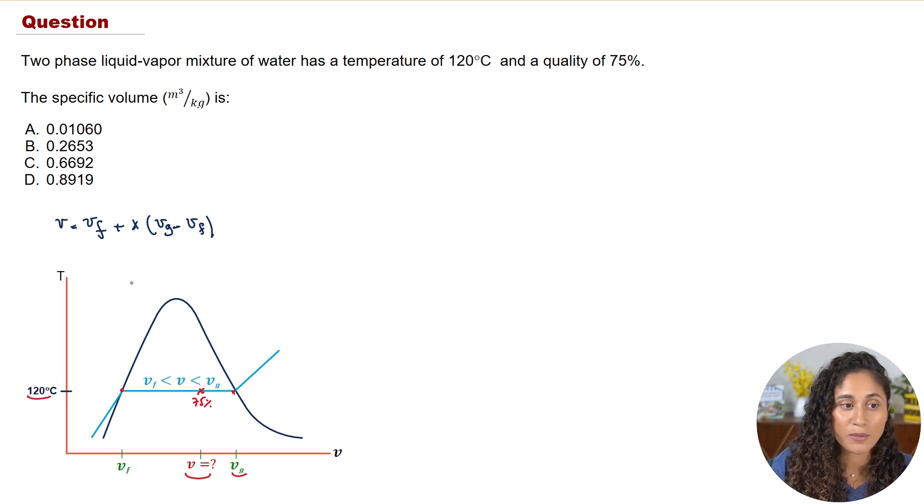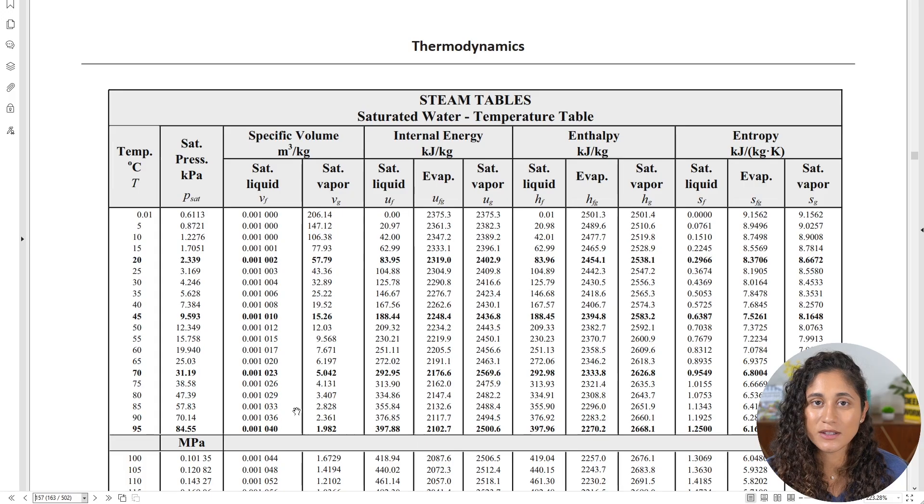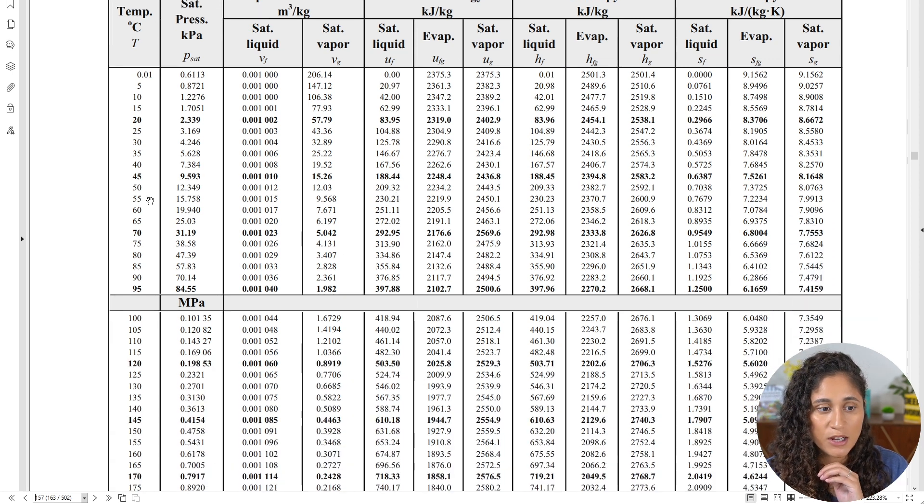So now let's go to the steam tables and grab the values for the specific volume of the saturated liquid and the saturated vapor. If we go to the thermodynamics section here we are given the steam tables, so we're going to take a look at the temperature 120. For 120 this is going to be the saturated liquid and this is going to be the saturated vapor. These are the values that we're going to use.